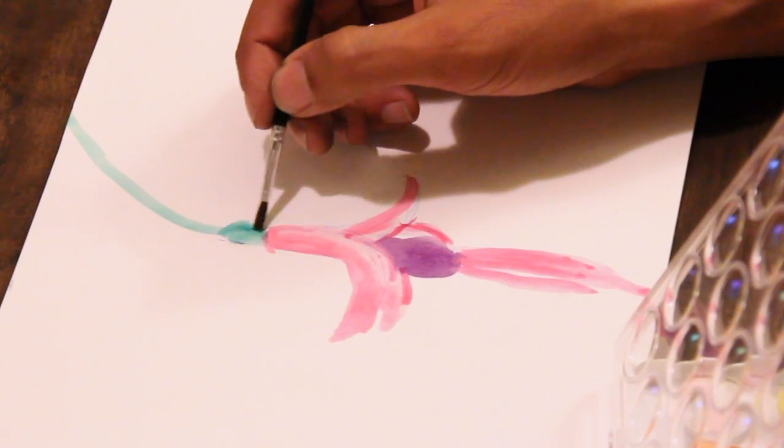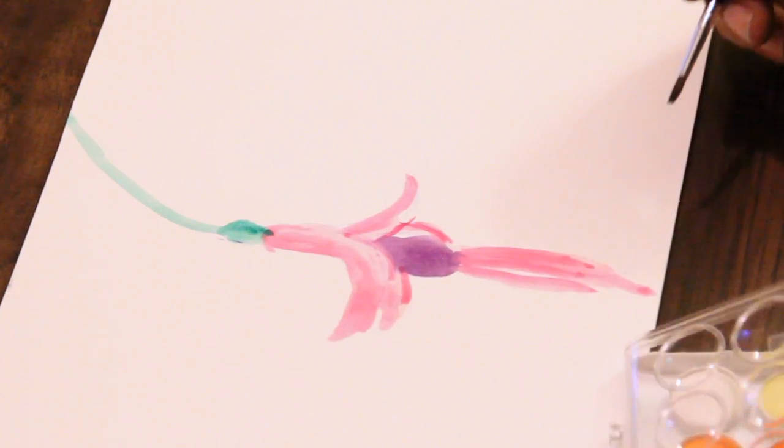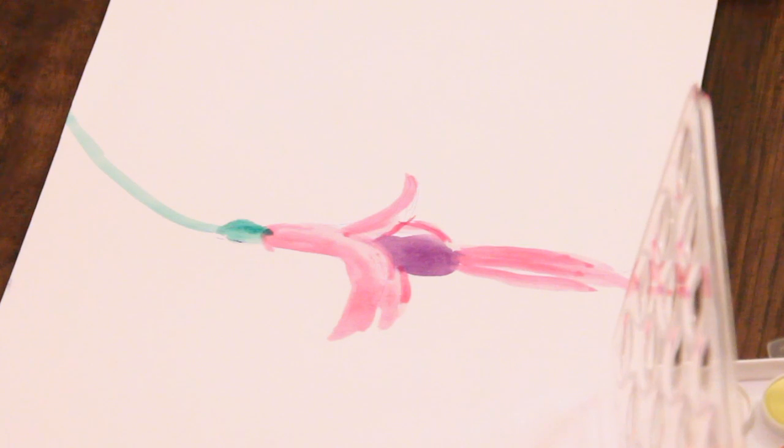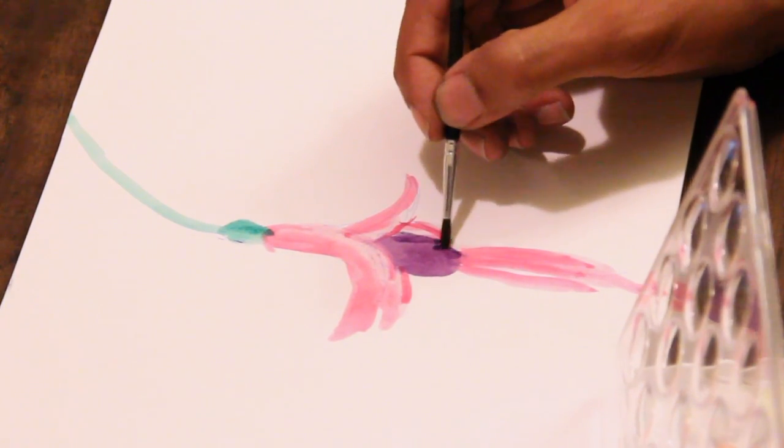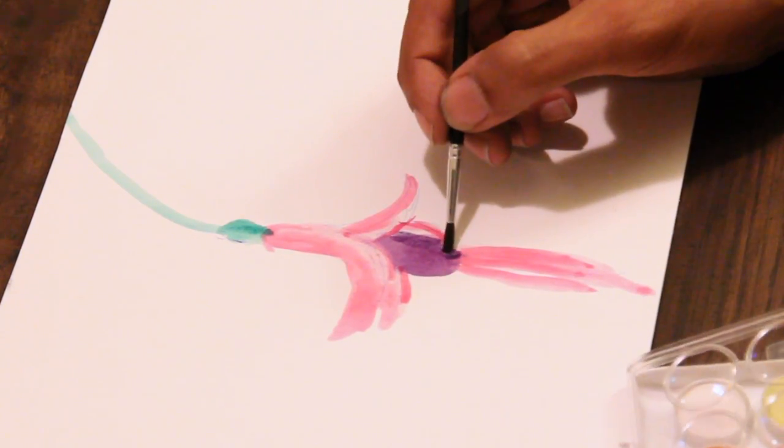Add a little bit of darker green to the top, and I'm just going to add a little bit more purple to finish this off. And there we have our fuchsia plant in watercolor.